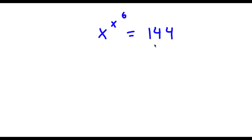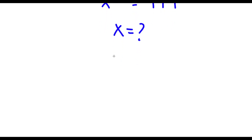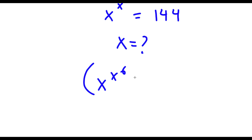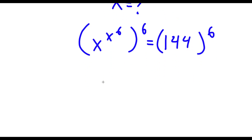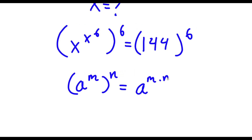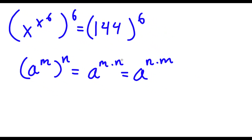Alright, so I have x to the power of x to the power of 6 is equal to 144. I want to find the value of x. To start, I'm going to take the power of 6 on both sides. Now if I have something in the form a to the power of m to the power of n, this is the same thing as a to the power of m times n. And m and n are interchangeable, meaning this is the same thing as a to the power of n times m.